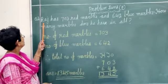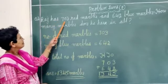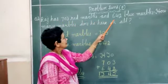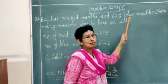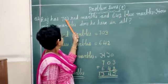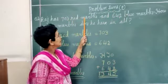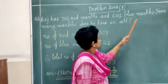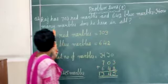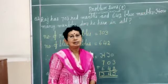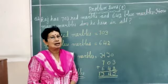Here our question is: Arpit has 703 red marbles and 642 blue marbles. How many marbles does he have in all? How many are there total? That's what we have to find out.